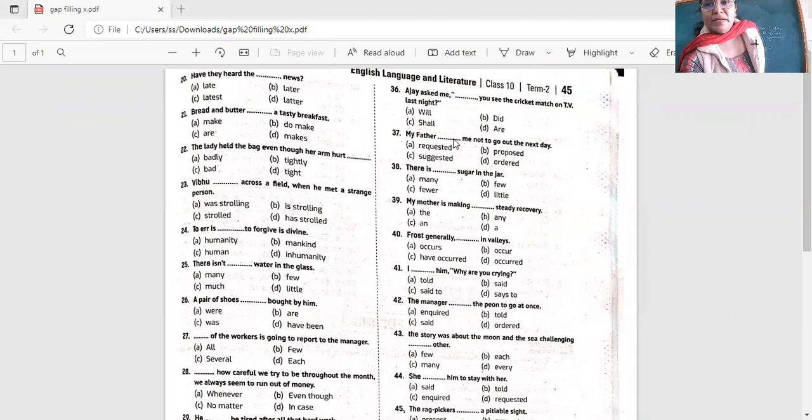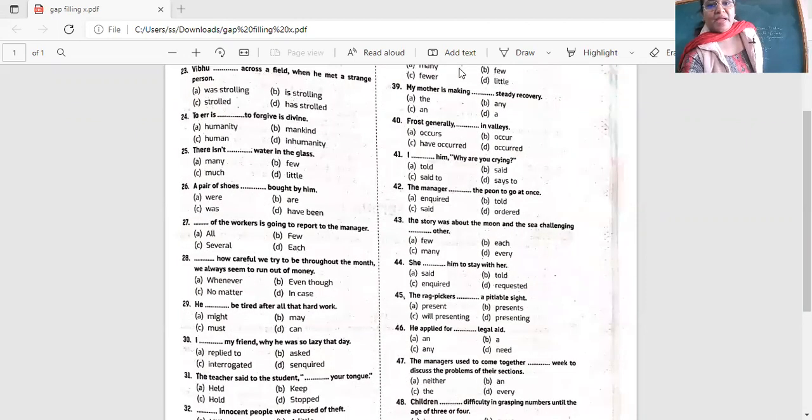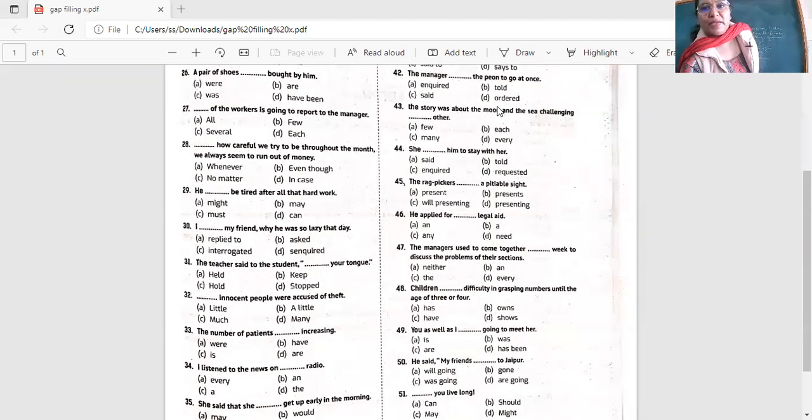Now let's see the next one. Yeah. Next. A pair of shoes. Pair of shoes. Pair is. Although there are two, but it is. A pair of shoes were bought by him. Was brought by him. Yes? Pair hai, singular hai, toh was. Yes, a pair of shoes was bought by him. Okay.